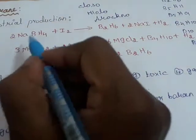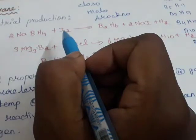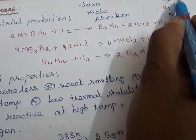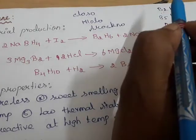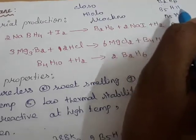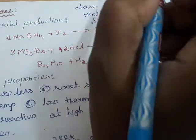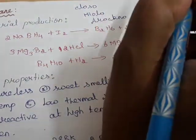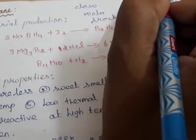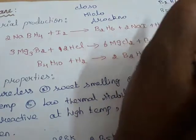Now we are going to see the industrial production of Diborane — how to prepare Diborane. The formula of Diborane is B2H6. Suppose you think boron reacts with hydrogen to form Diborane; boron does not react with hydrogen directly. So boron reacts with metal hydrides — any metal hydrides — to form Diboranes.